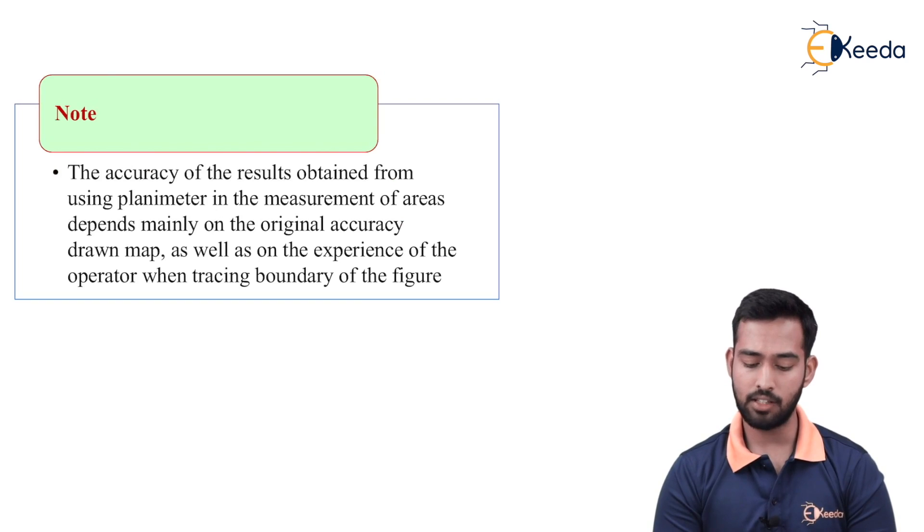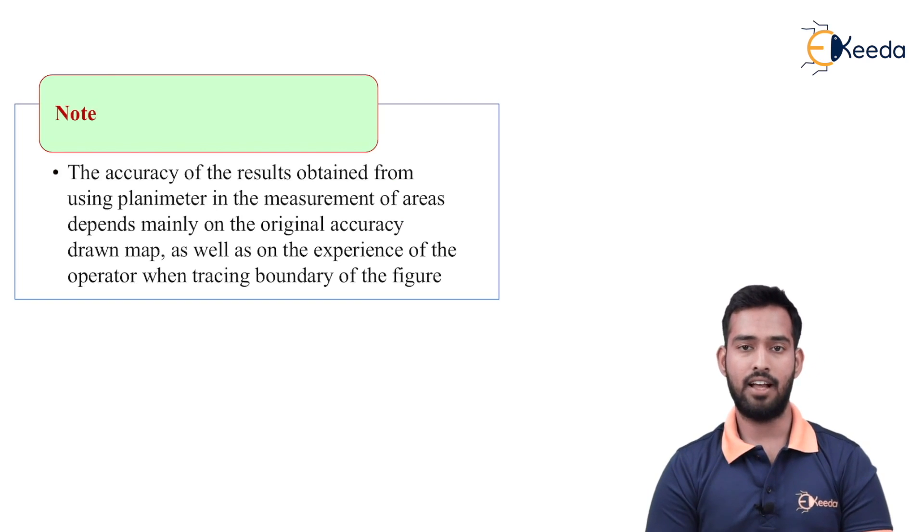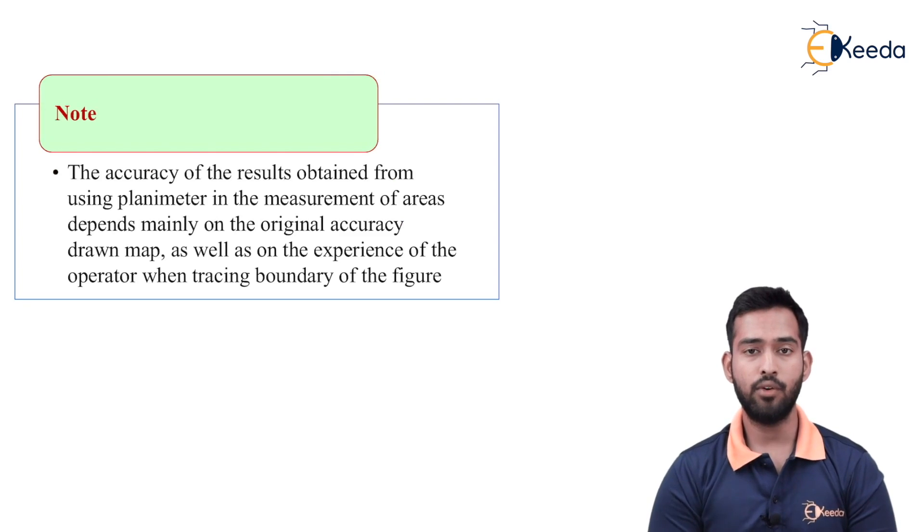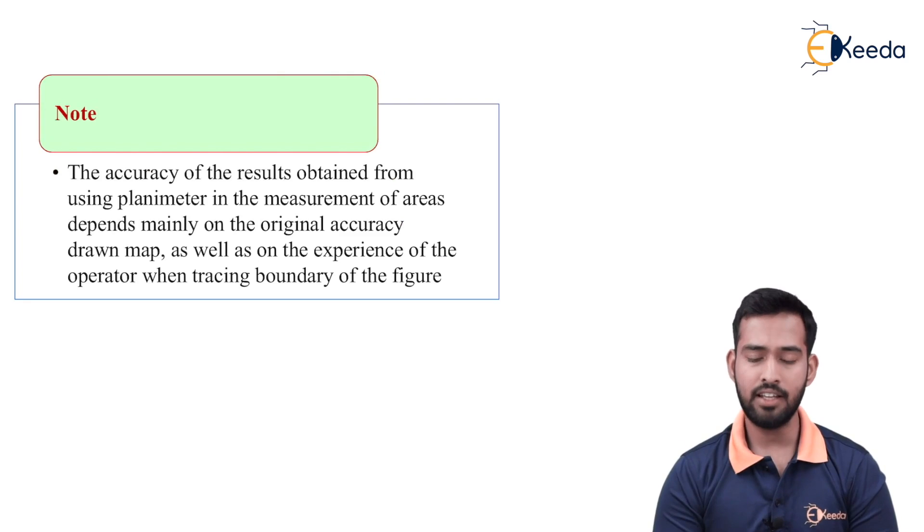As well as on the experience of the operator when tracing the boundary of the figure. As we have discussed earlier, we have to accurately trace the boundary of the figure. If there is some error while tracing the boundaries, we will get area plus or minus the accurate area.